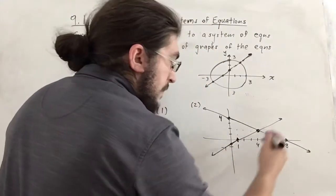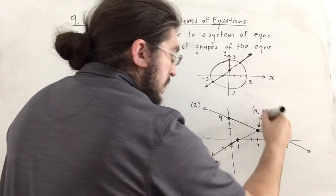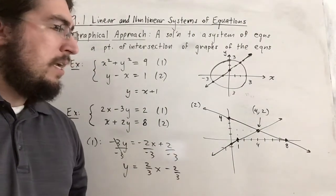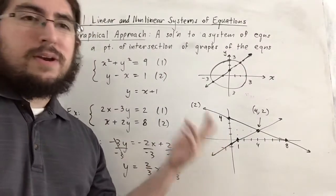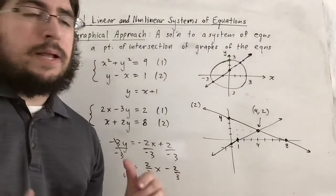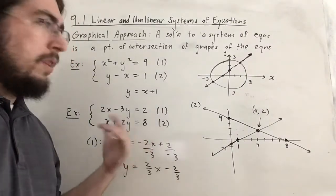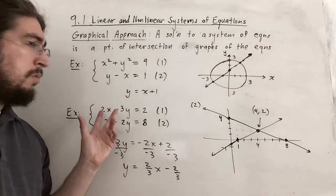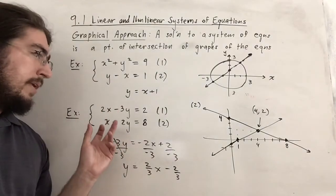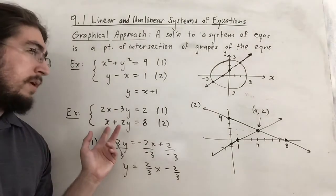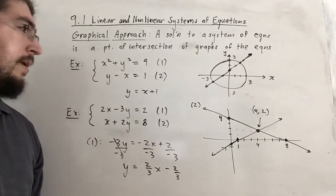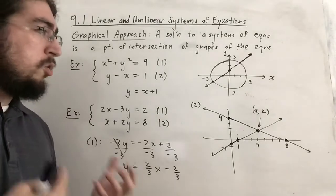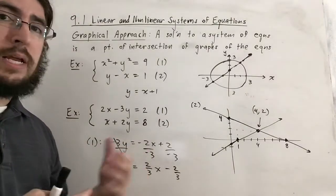This intersection point is (4, 2). I knew this because I designed the problem with that solution. We can verify: when x=4 and y=2, the first equation gives 8 minus 6 = 2 ✓, and the second gives 4 plus 4 = 8 ✓. This shows why graphing isn't the best approach to solving, but it provides nice intuition about what systems are doing graphically.